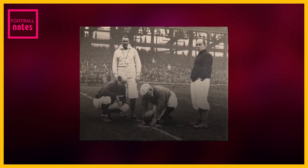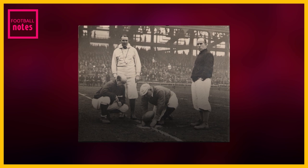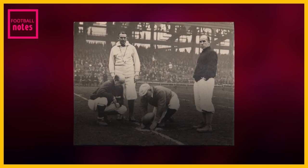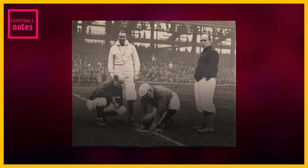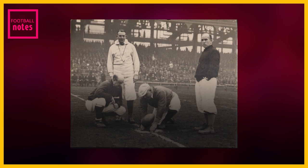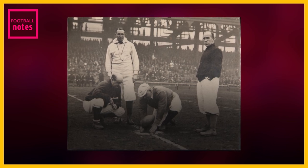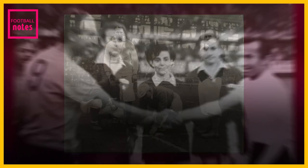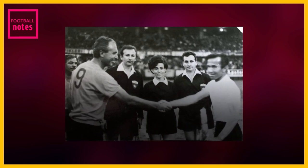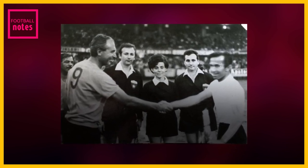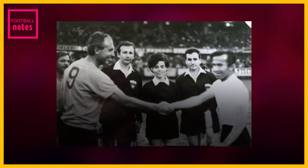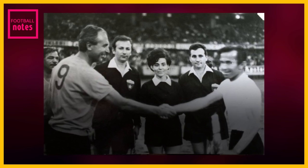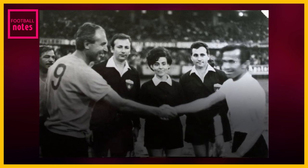However, dispute settlement was not straightforward since both parties were looking out for the interests of their own teams. They therefore appointed a third party who would be referred to when there are difficulties. This third party was termed 'referee' because he is being referred to, and the umpires later became the linesmen.